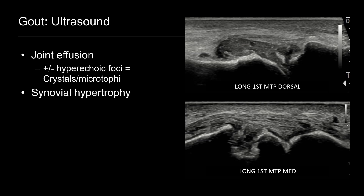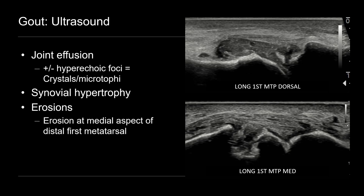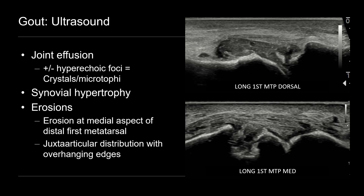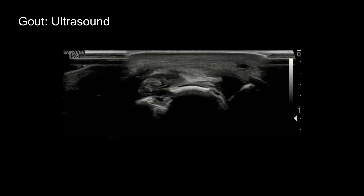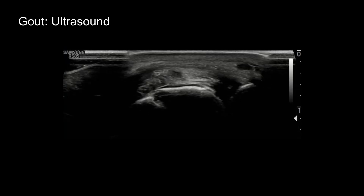Synovial hypertrophy is common, as are erosions — typically at the medial aspect of the distal first metatarsal. The classic appearance of erosions is that they are juxta-articular in distribution, meaning they're adjacent to the joint but not directly at it. They have overhanging edges, sometimes described as having a punched out appearance. We can often appreciate this best in real-time evaluations.